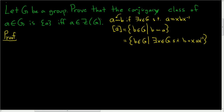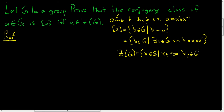What is the center of G? The center of G is all of the elements in G that commute with everything. So the center of G consists of all the X's in G such that X g is equal to g X for all little g in big G. So that's the center of a group.